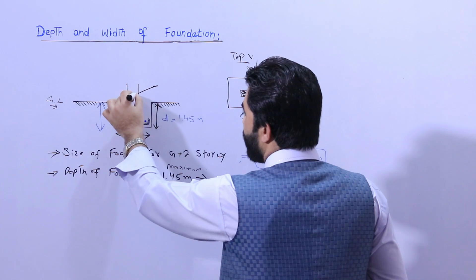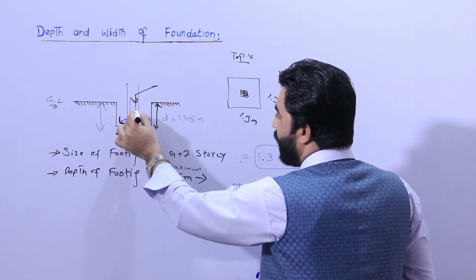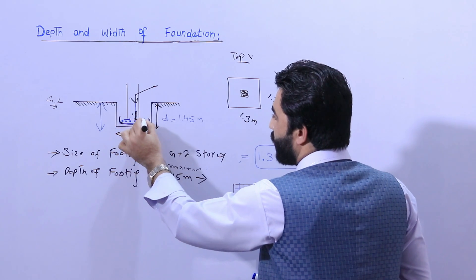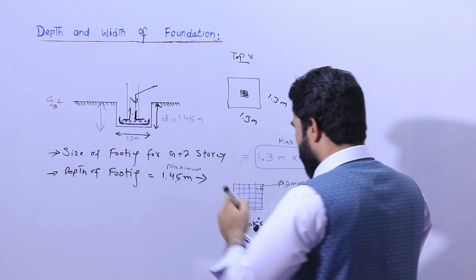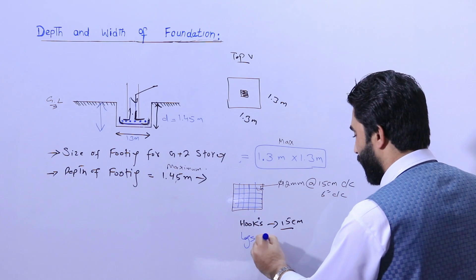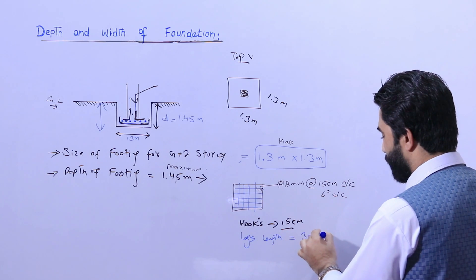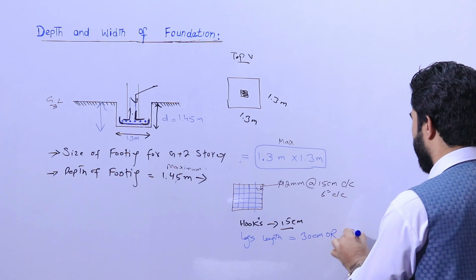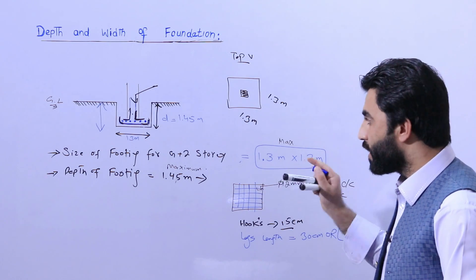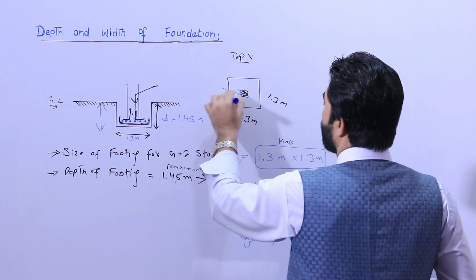The column longitudinal bars should be placed on top of the mesh — visible on both sides. The leg length for the column should not be less than 30 centimeters or 12 inches. This is very important for the singly mesh arrangement.